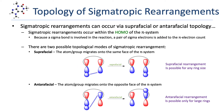In an antarafacial rearrangement, the atom or group migrates onto the opposite face of the pi system from which it was originally attached. Here we see a simple migration of a hydrogen atom in an asymmetric molecular orbital. The s-orbital of the hydrogen atom now migrates from the bottom lobe on the left end to the top lobe on the right end of the molecular orbital. Because it migrates from the bottom onto the opposite top face, the reaction is antarafacial.